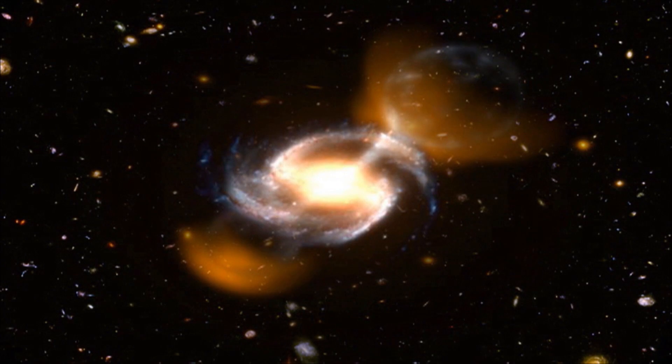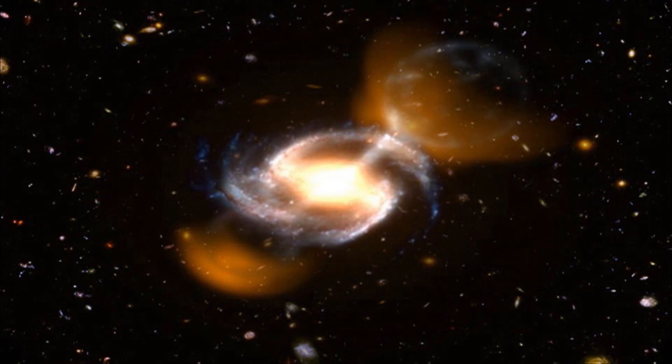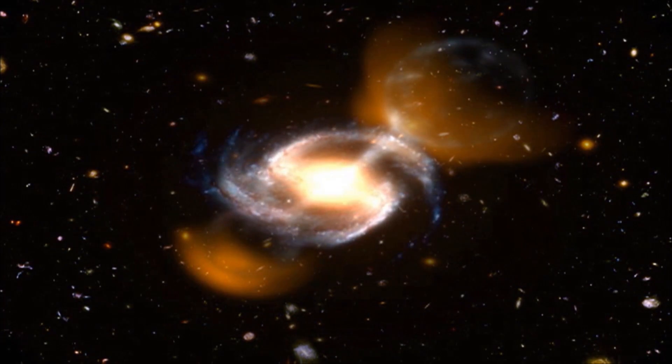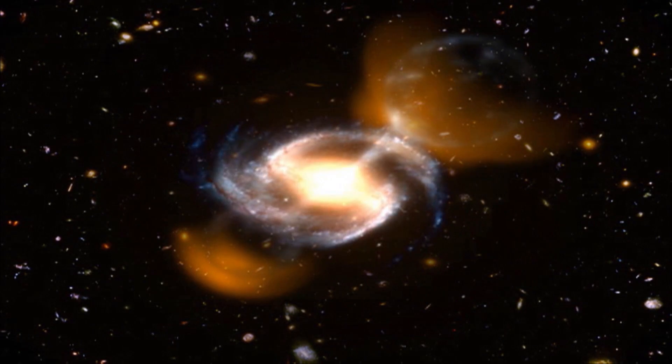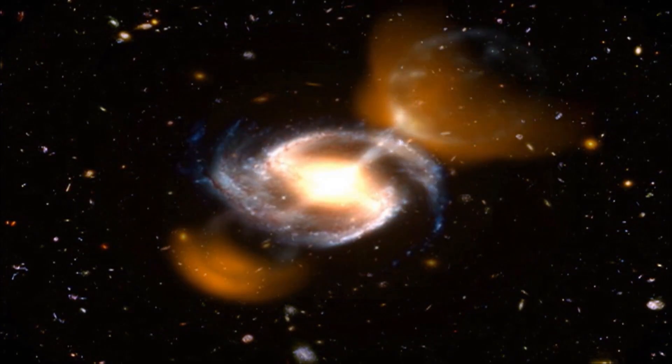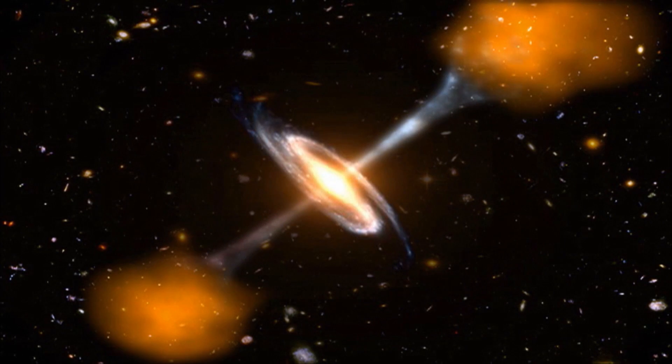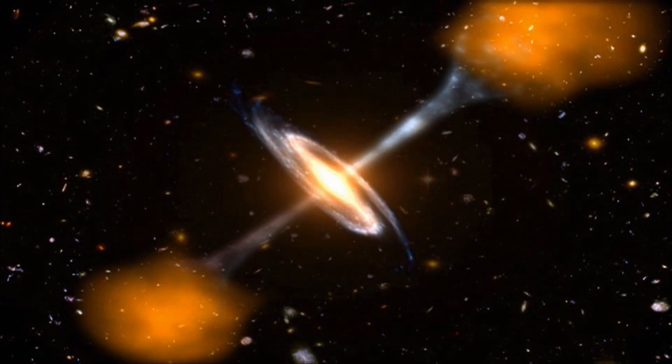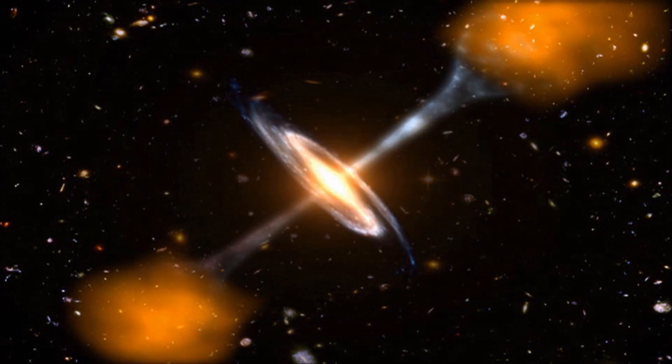Astronomers have long puzzled over a class of ultra-bright beacons of light from the distant universe called quasars. In time, they link them to the outpouring of energy from the centers of galaxies and to growing black holes. But how can something that emits no light shine so brightly?